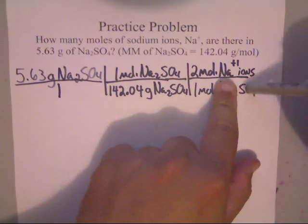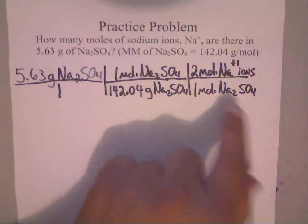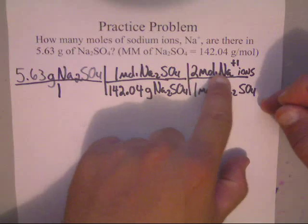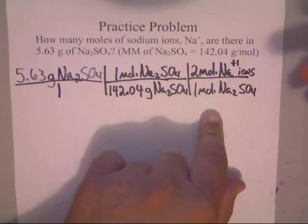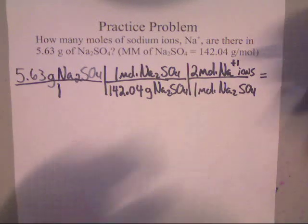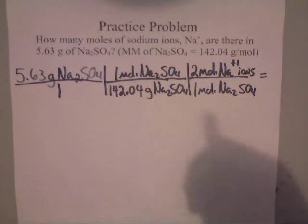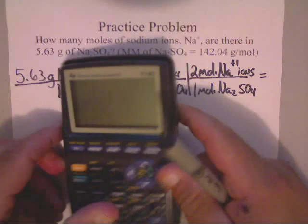But since they're dealing with an ion here, they want you to know that you've got 2 moles of Na⁺ ions. And if you want to know about sulfate ions, then you would write down that you'd have 1 SO₄ here, 1 mole of sulfate ions. But luckily for us, they just ask about Na⁺. So that's the nice part of it.